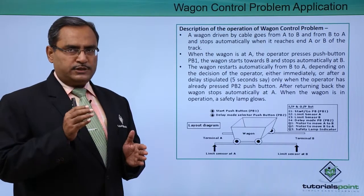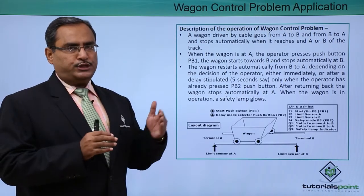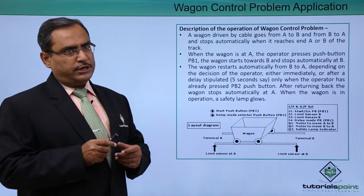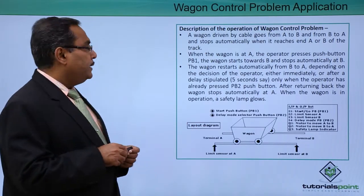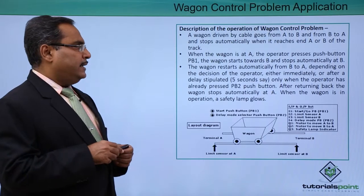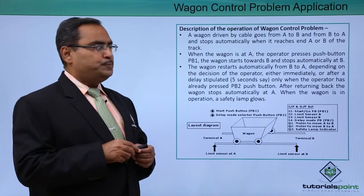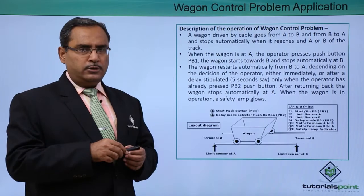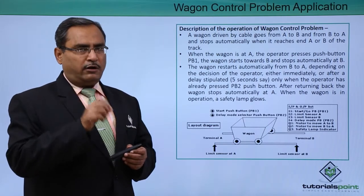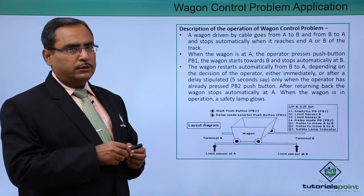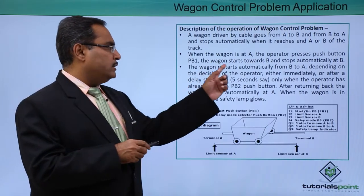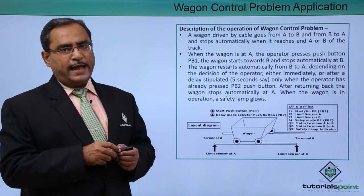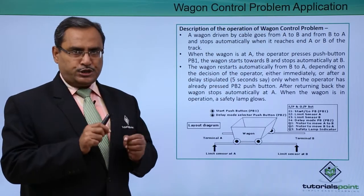The wagon moves from station A to station B and then returns back from station B to station A. When the wagon is at A, the operator presses push button PB1, which indicates the start of the journey. The wagon starts towards B and stops automatically after reaching station B.